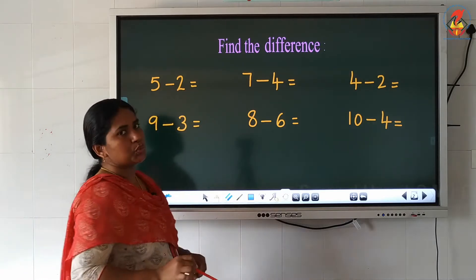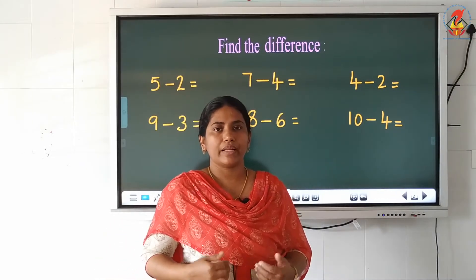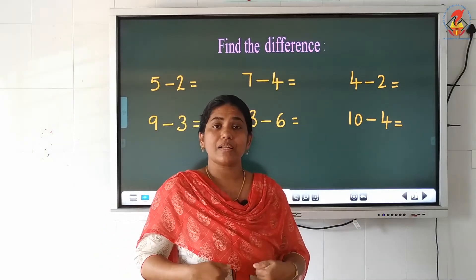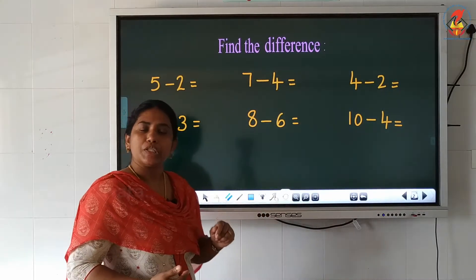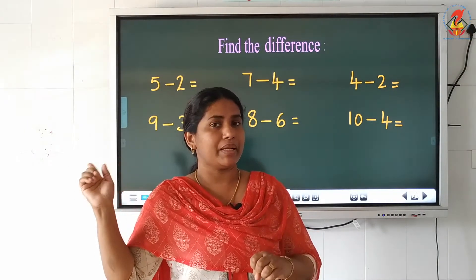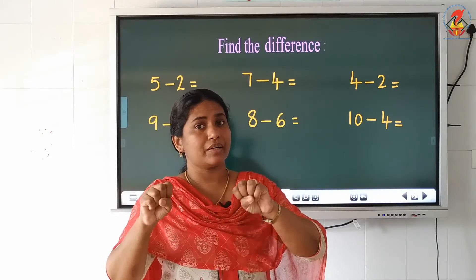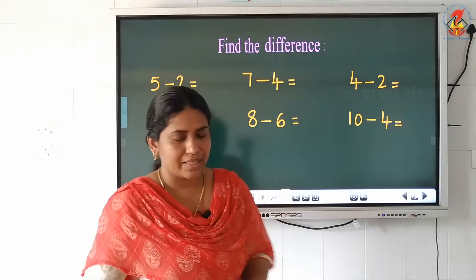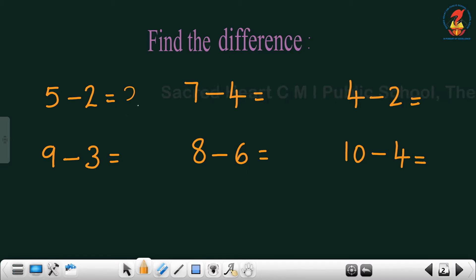5 minus 2. In first standard we studied how to find the answers. We start counting after the smaller number to the bigger number. The small number here is 2. So after 2, we count: 3, 4, 5. How many fingers did I raise? 3. That is our answer — 3.